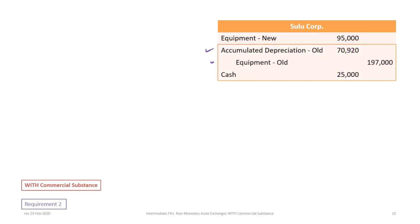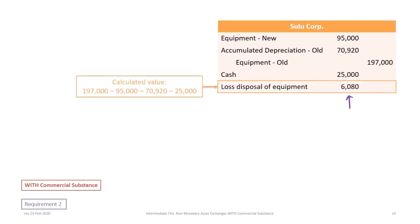For Sulu's journal entry: accumulated depreciation receives a debit of $70,920, equipment is credited $197,000, and cash receives a $25,000 debit. The balancing amount is $6,080, which can be verified: $197,000 minus $95,000, minus $70,920, minus $25,000 equals $6,080.